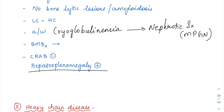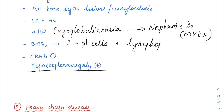On bone marrow biopsy, as the name suggests, you will see lymphocytes, plasma cells, and lymphoplasmacytic cells present.